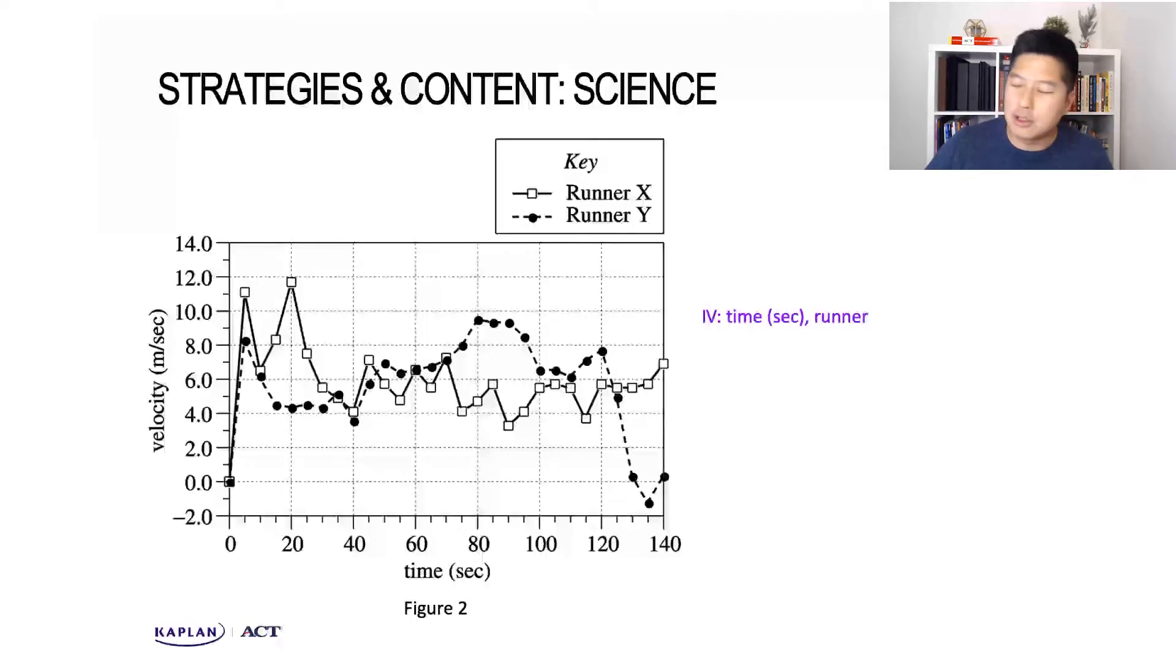In the second figure, we've got again the independent variable time on the x-axis, and this time on the y-axis we're measuring the dependent variable velocity. We can see how the velocity changes based on the runner's strategies. Now let's see what the questions are asking, and remember to draw the information we need to get our answer.